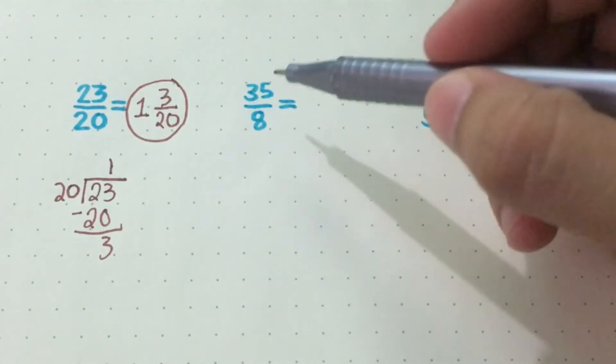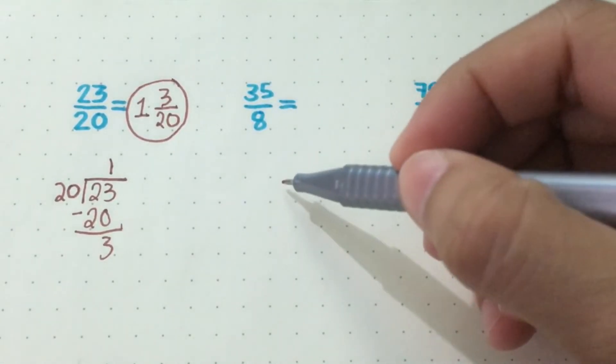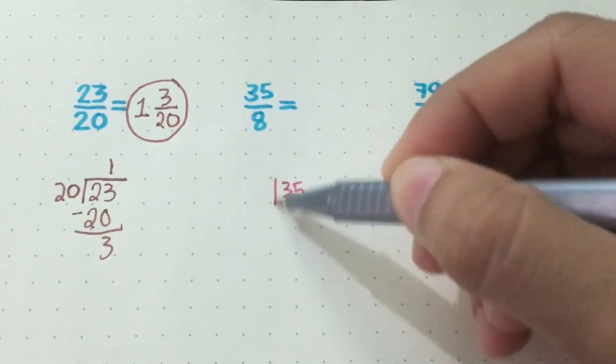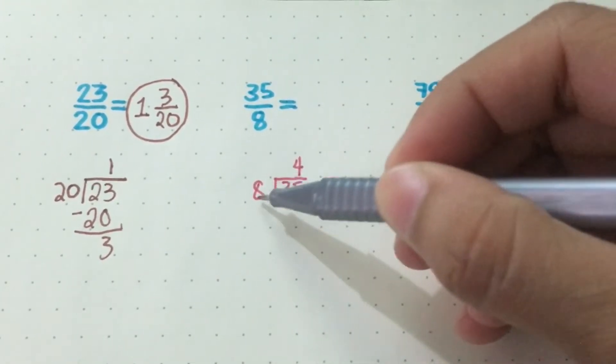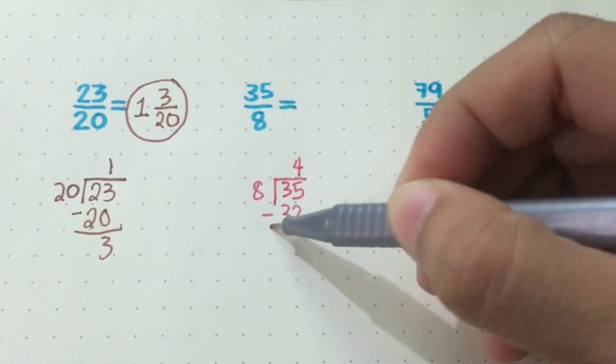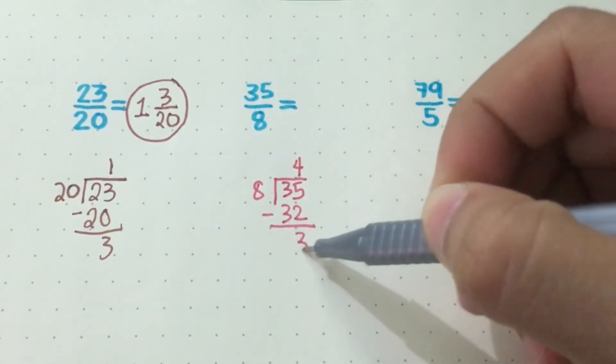Next, let's try this one. 35 over 8, so that means we need to divide 35 by 8. 35 divided by 8, so we'll get 4. 4 times 8 is 32, subtract. 35 minus 32 is 3.